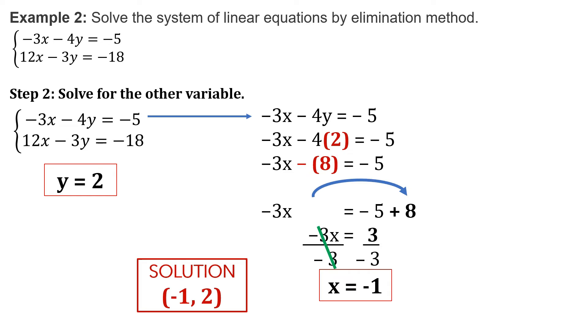So, the solution for this system of linear equations is negative 1 and 2 — negative 1 for x and positive 2 for y.